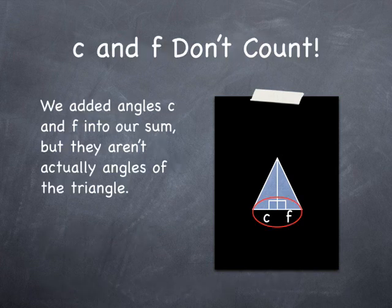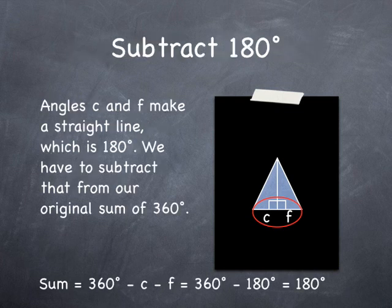We added up the two small right triangles to get 360 degrees. But C and F aren't actually angles in the big triangle. We have to subtract off angles C and F that were mistakenly added to our sum.